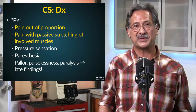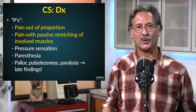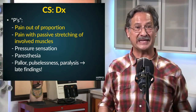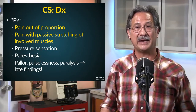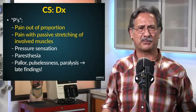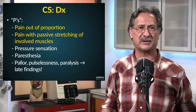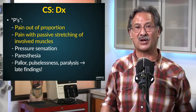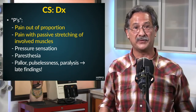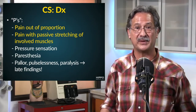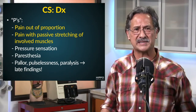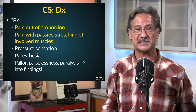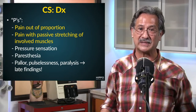The diagnosis is made clinically. We talk about the P's. The key P's to know are pain out of proportion — this is a circumstance where the person has a disproportionate amount of pain that you wouldn't expect for a given injury, and might need larger doses of narcotics for pain control. The other key P is pain with passive stretching of the involved muscles. Other findings include a sensation of pressure or tightness, paresthesias, pallor, pulselessness, or paralysis. These are all considered late findings in this condition.